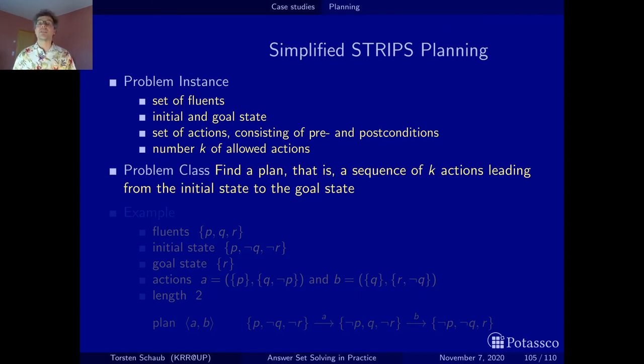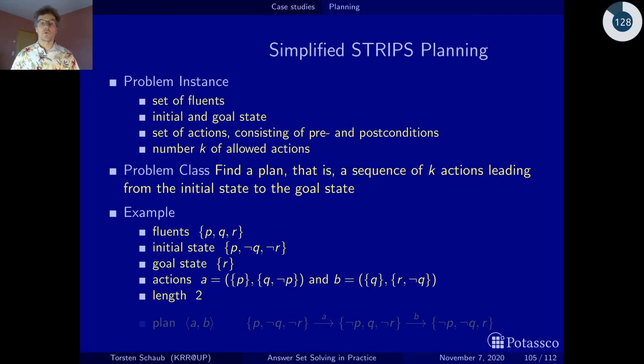But before we do that, let's look at an example. Our example uses three fluents, p, q, r. These guys are here. And the idea is they can change their truth value over time. We have an initial state where p is true, q is false, and r is false. And in the goal state, we want that r is true. Now, to get from the initial state to a goal state, we have two actions, a and b.